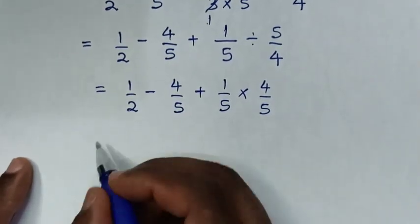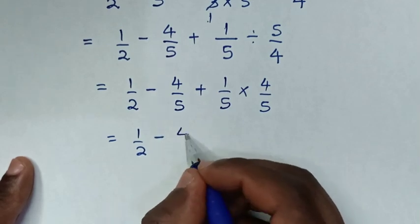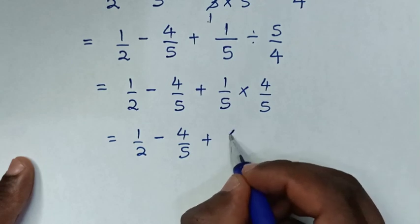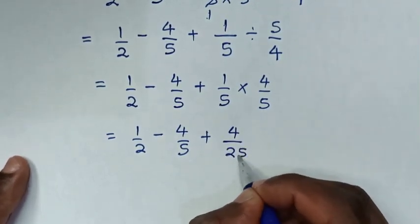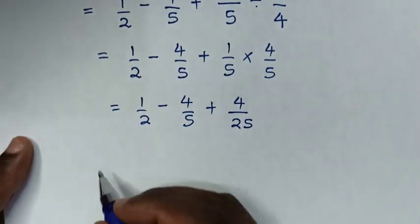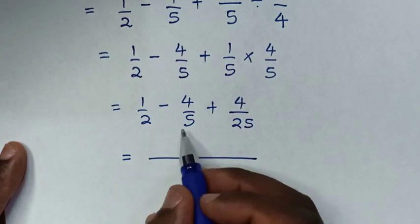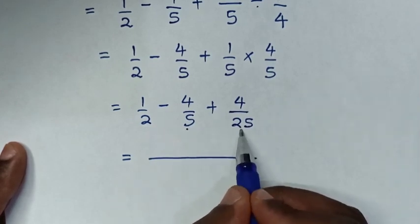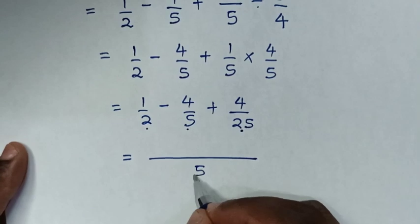Then it will be equal to 1 over 2 minus 4 over 5, then plus 1 times 4 is 4, over 5 times 5 is 25. Then in the next step, it will be equal to the LCM of 2, 5, and 25. LCM of 5 and 25 is 25. Then LCM of 25 and 2 is 2 times 25, which is 50.